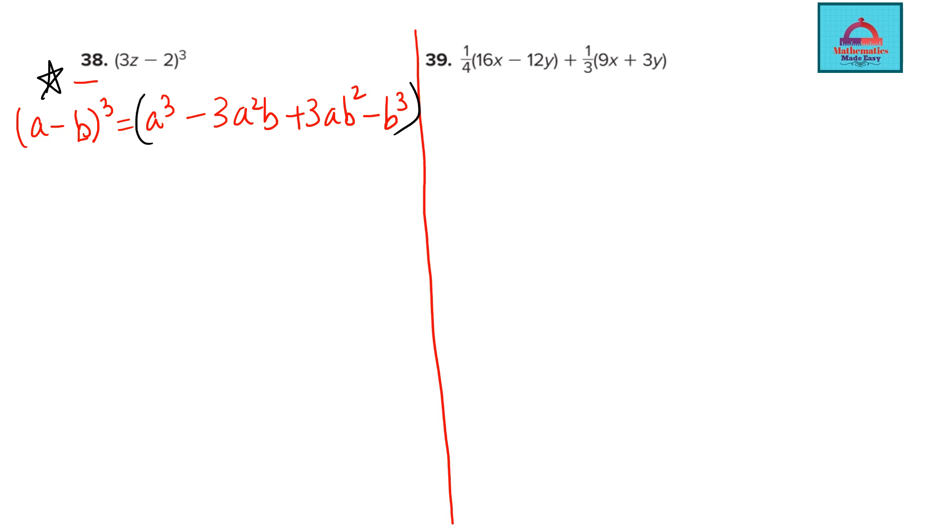I want you to learn this because we will be using this for solving question number 36, 37 and 38. So let's compare. How much is your a, the first term? a is 3z. Second term b is 2 and see there is a negative sign in between. So we are going to now expand this, find the value of this using the right side.